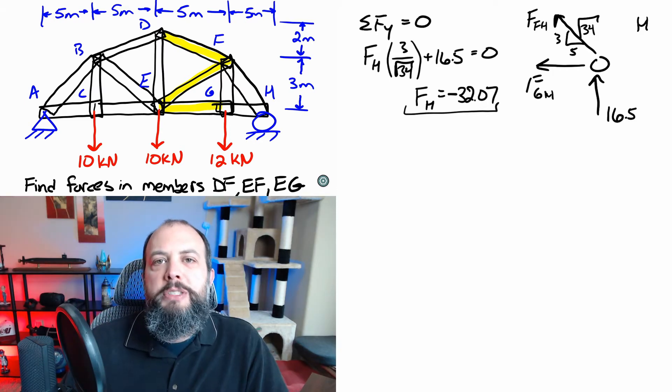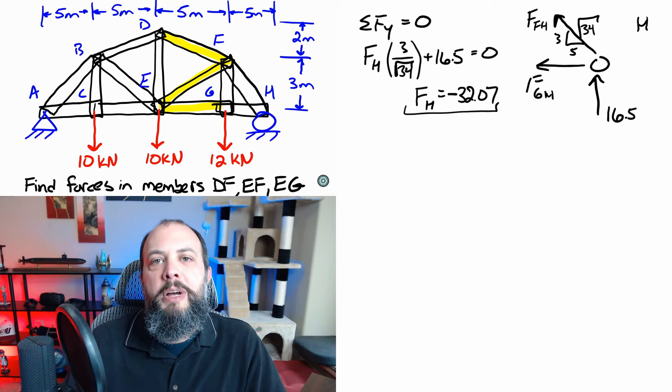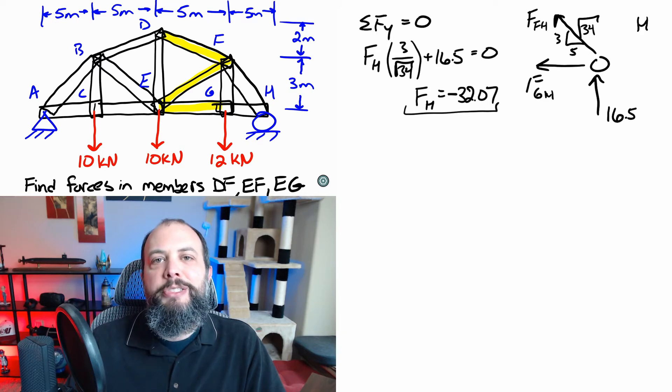For every member of the truss I'm always going to draw them on my free body diagram in tension. So that means that a negative answer actually means that this piece is really in compression. However when that piece appears on another free body diagram I'm still going to draw it in tension and still use this negative number in the equations. So sign errors involving forces in compression is one of the easiest way to make mistakes for this type of problem.